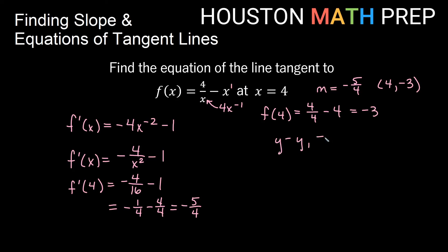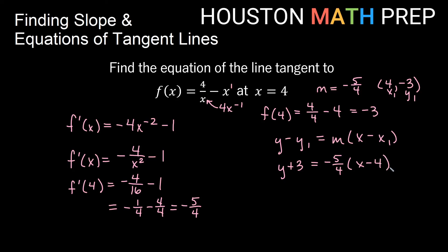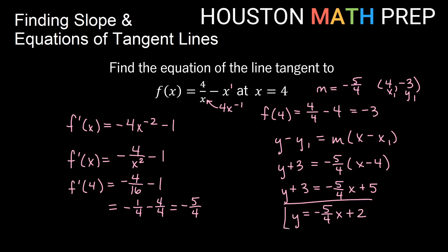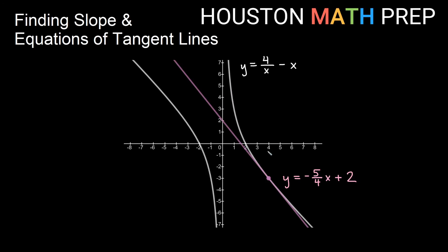Using point-slope: y minus y1 equals m times x minus x1. With x1 = 4 and y1 = -3, we get y plus 3 = -5/4 times (x minus 4). Distributing, the 4s reduce and we get negative 5/4 x plus 5. Subtracting 3 from both sides gives y = -5/4 x + 2. Looking at the graph, you can see the tangent line through (4, -3) with slope -5/4 and y-intercept of positive 2.